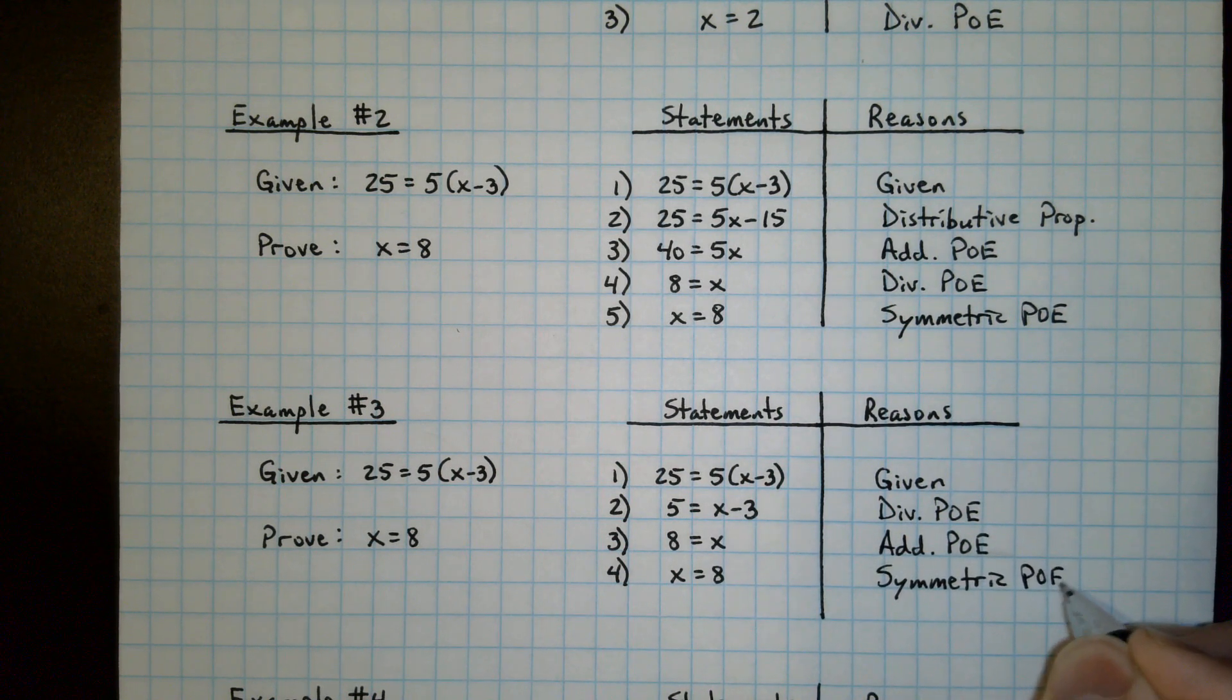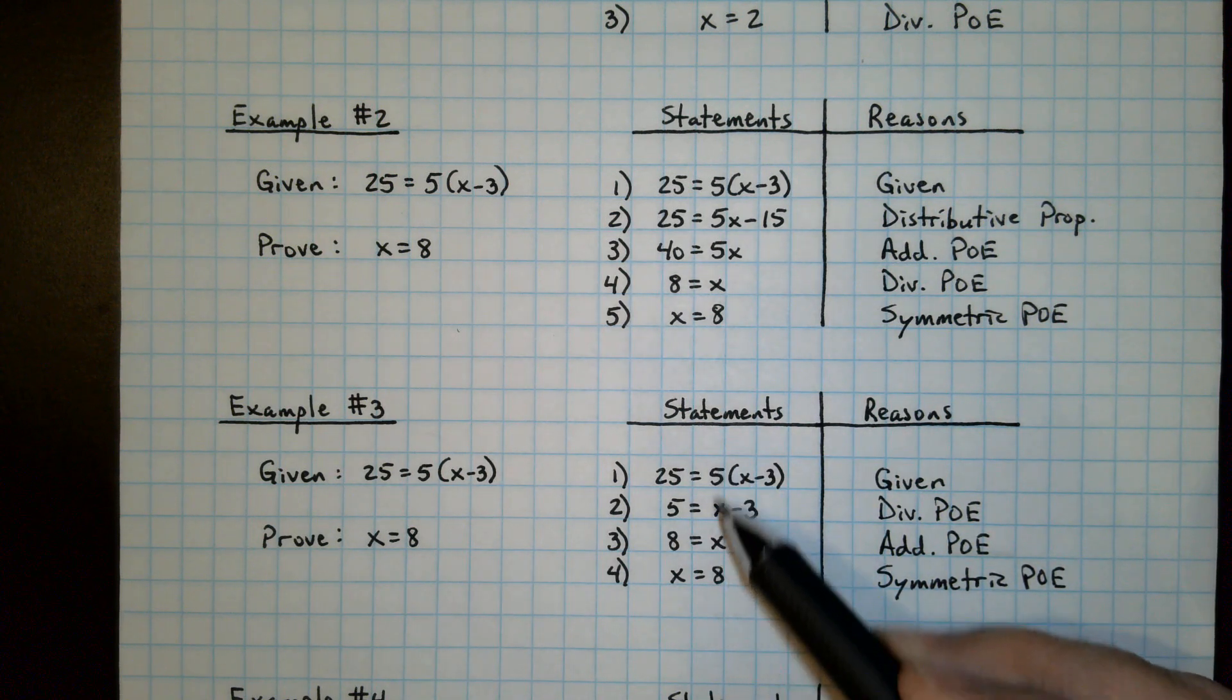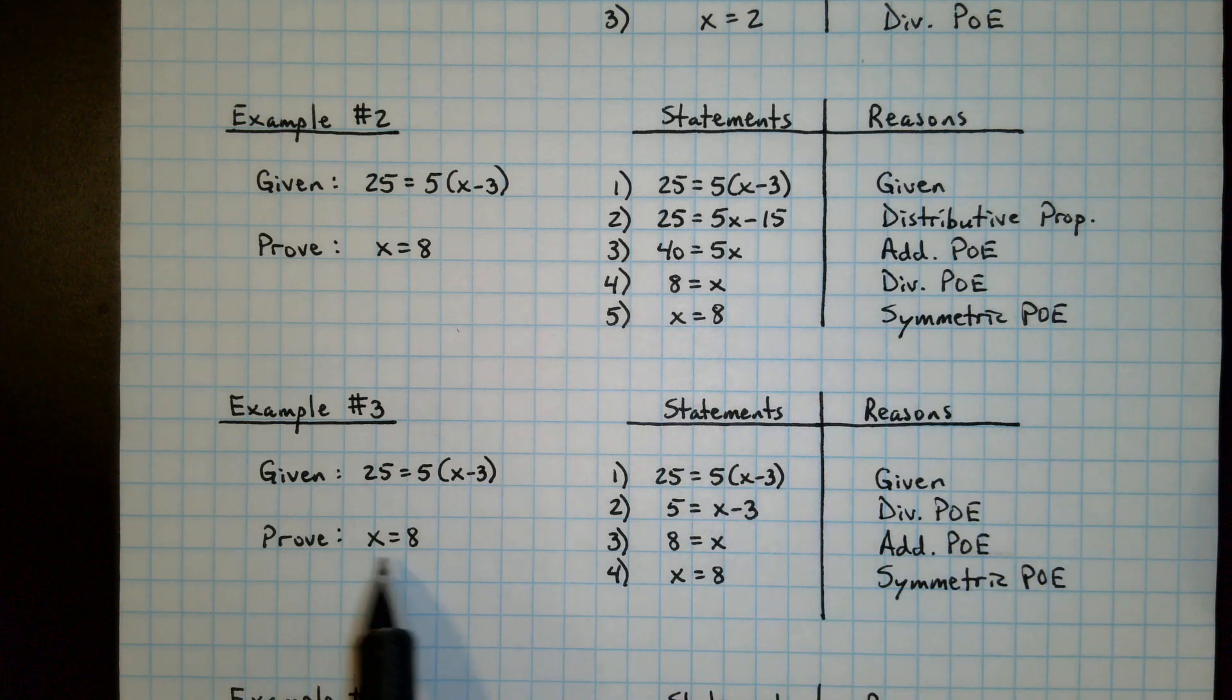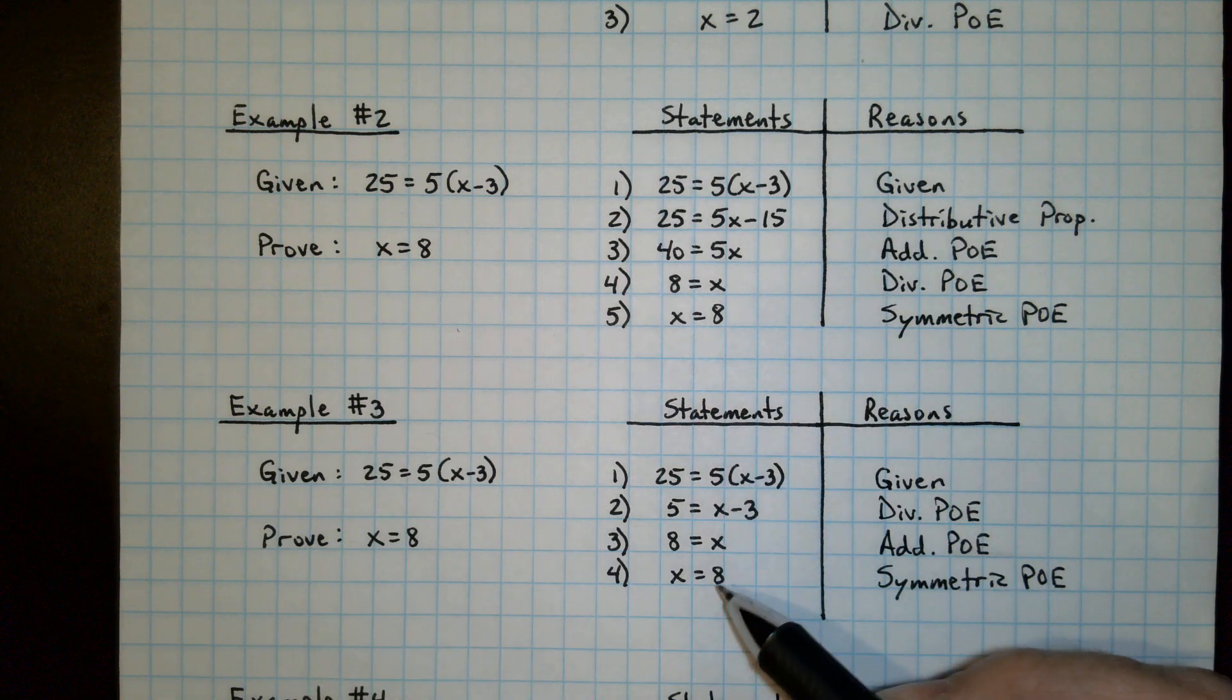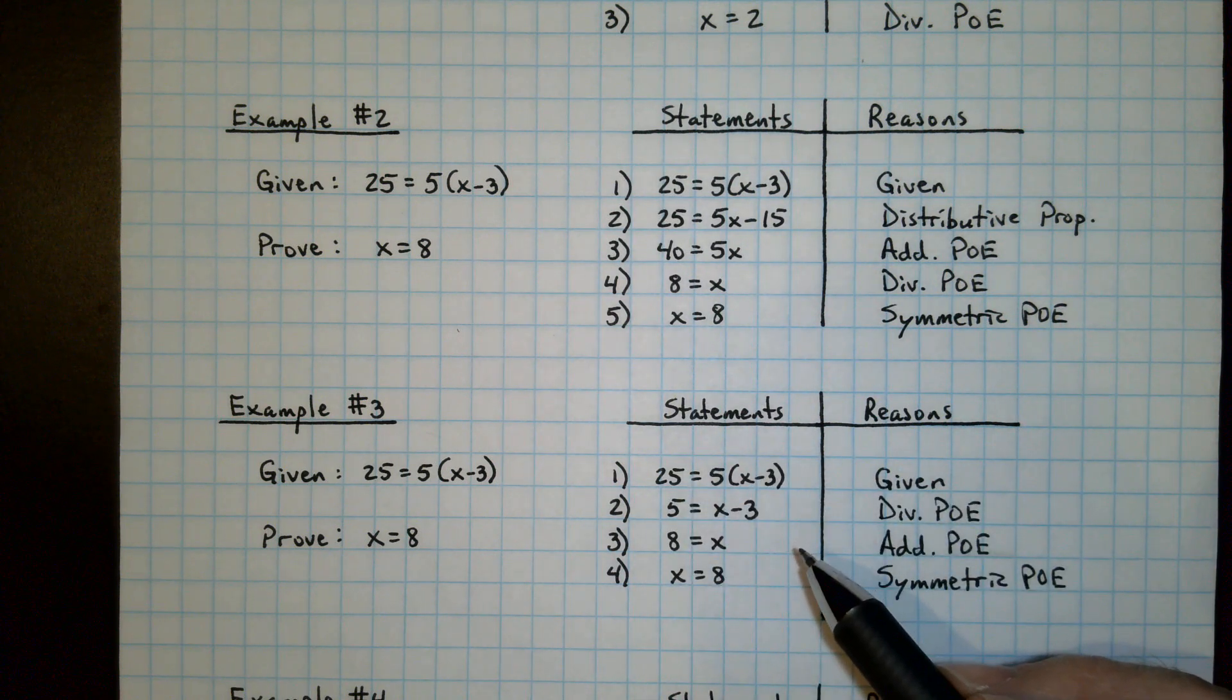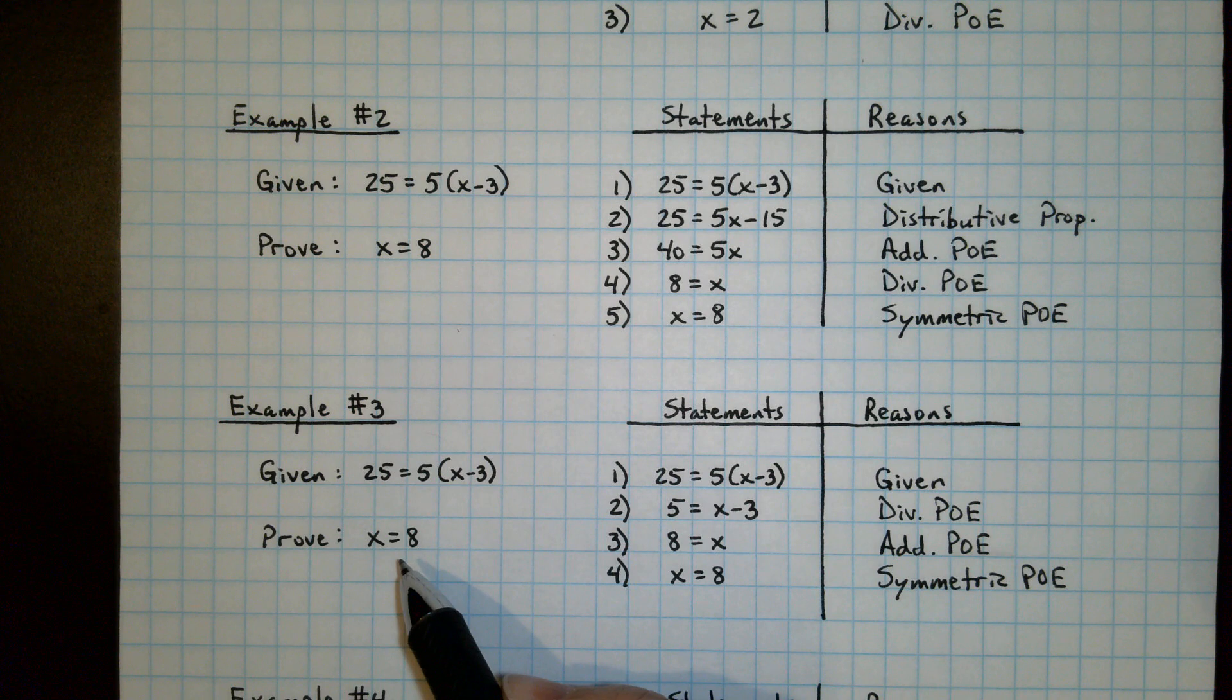Now it's possible when you're doing a proof to do certain things the way you would like them. But you have to always get to the prove line. Now if the statements are already provided, then you have to give the reasons that fit those. But if you're creating the entire proof yourself, then you can do the statements however you choose, as long as you reach this final proof statement. When your last statement looks like the proof statement, you know that you've completed it.